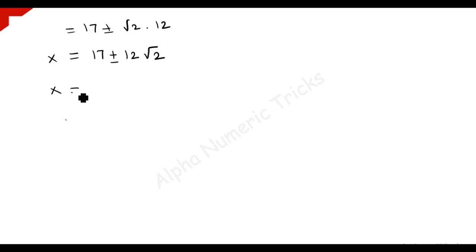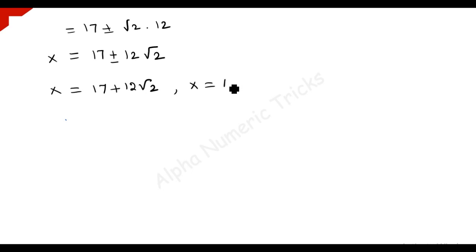So the value of x, which is m over n, is equal to 17 plus or minus 12 root 2. That gives x equals 17 plus 12 root 2, or x equals 17 minus 12 root 2.